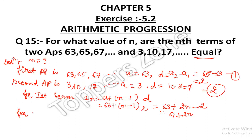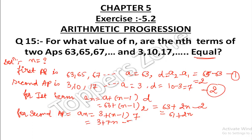For the second AP, we apply the same formula: an = 3 + (n−1)×7. Expanding gives 3 + 7n − 7. So 7n, and minus 7 plus 3 is minus 4, giving the nth term as 7n − 4. This is our fourth equation.